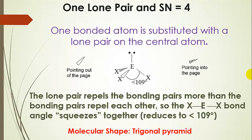What happens when we have a lone pair on the central atom instead of one of the bonded atoms? The steric number is still four — one lone pair and three bonded atoms. That lone pair takes up more than its share of room, squeezing the other atoms together, resulting in a bond angle less than 109 degrees. The lone pair repels bonding electrons more than bonding electrons repel each other. We call this shape a trigonal pyramid — if you set it on a countertop it would look like a little pyramid. We name the shape based on bonded atoms, not lone pairs.